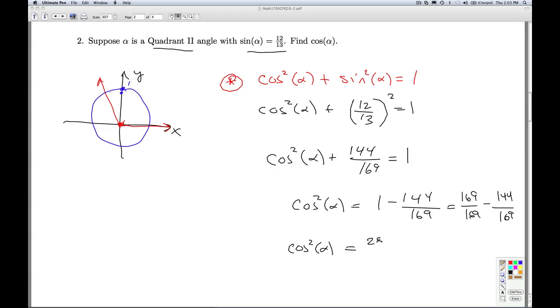So you get 25 over 169, and then we extract square roots here. Cosine of alpha equals plus or minus square root of 25 over 169, which is plus or minus 5 over 13. Plus or minus 5 thirteenths.